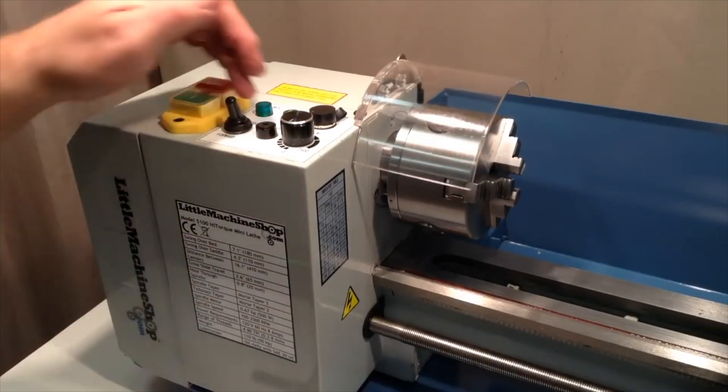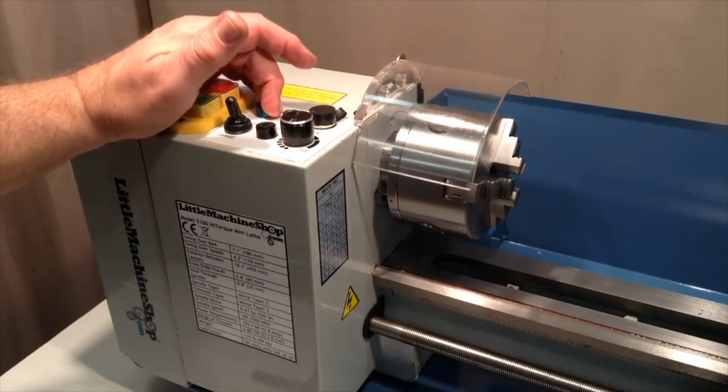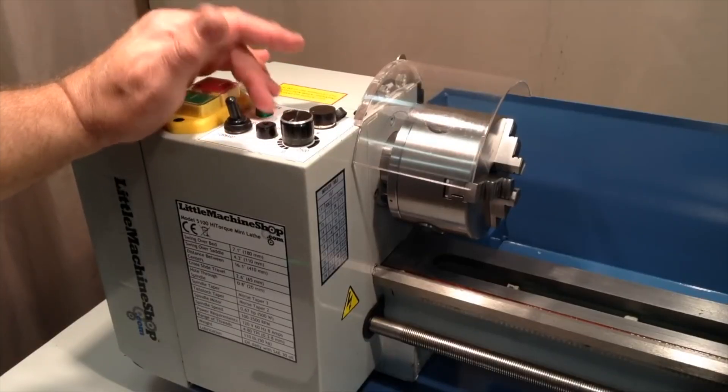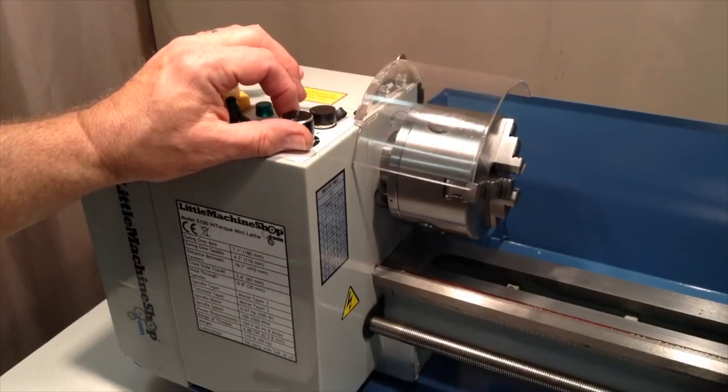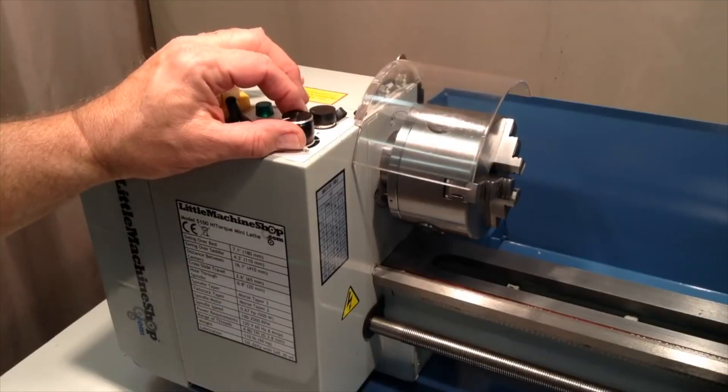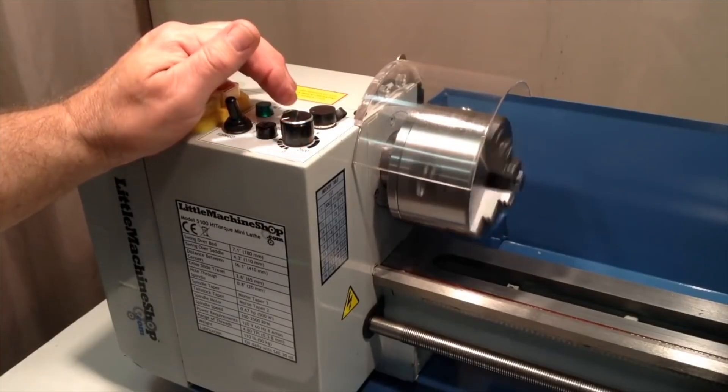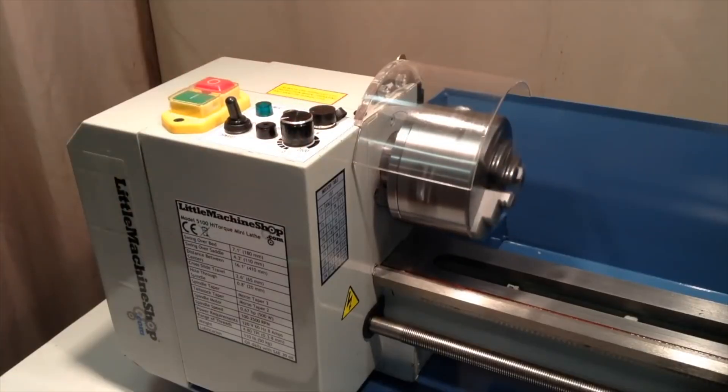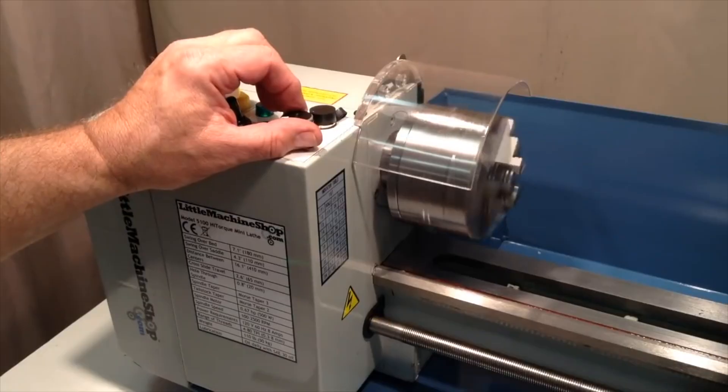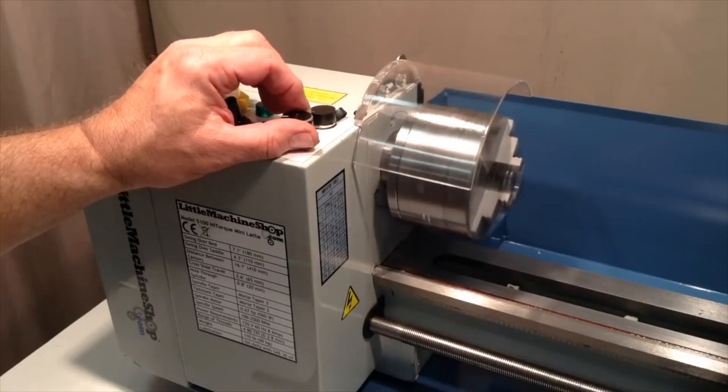It shouldn't do anything at first. The pilot light should come on. You should see a dim green glow down in there. It's hard to see with this lighting. And now that we've done that, I can just slowly advance the speed control knob and the chuck should start to turn slowly. And then as you advance the speed control knob, it'll gain speed.